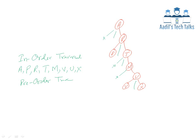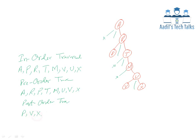Pre-order traversal on Tree 4: parent comes before its children. A, then child R which is the parent of P and T; T is the parent of M, M is the parent of U, which is the parent of V and X. So: A, R, P, T, M, U, V, X. Post-order traversal: A is the parent of R, R is parent of P and T, T is parent of M, M is parent of U, U is parent of V and X. So: V, X, U, M, T, P, R, A.